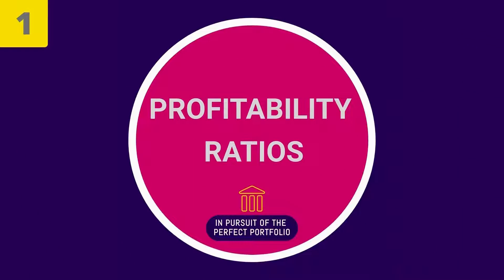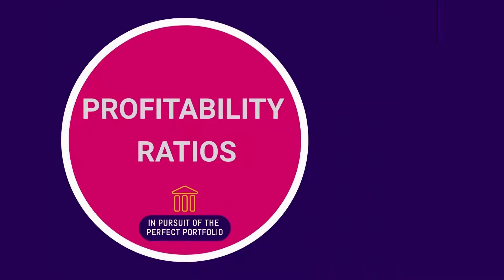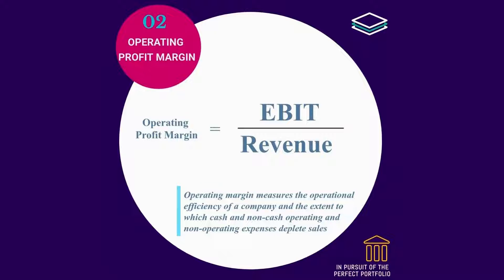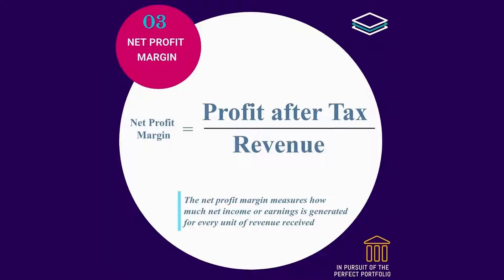Number 1: Profitability ratios. Gross profit margin is equal to gross profit divided by revenue. It measures how well each unit of sales is utilized to cover the cost of goods sold. Operating profit margin is equal to earnings before interest and tax (EBIT) divided by revenue. It measures the operational efficiency of a company and the extent to which cash and non-cash operating expenses deplete sales. Net profit margin is equal to profit after tax divided by revenue. It measures how much net income or earnings is generated for every unit of revenue received.